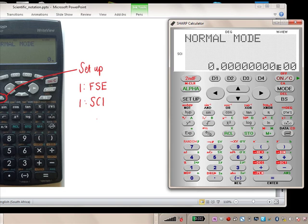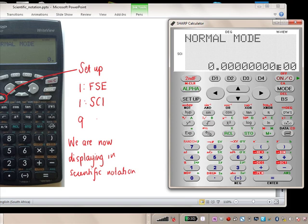We are now in scientific notation. So if now I want to write a number, and I want it to display in scientific notation, all I need to do is to write the number. Let's say I write 5, 3, 2, 7, and then I press equals, and you can see that it gives the answer in scientific notation. 5, 3, 2, 7 times 10 to the power 3. We'll speak more about that later.